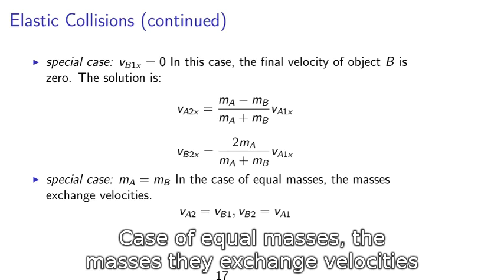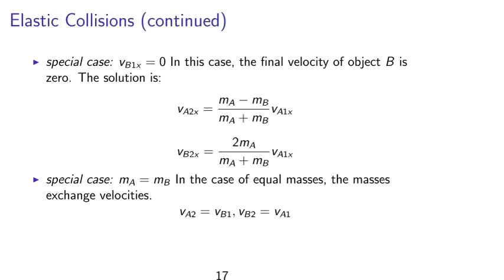We can consider the special case where ma is equal to mb or in the case of equal masses. What happens is that they exchange velocities. So va2 is equal to the initial velocity of b and final velocity of b is equal to the initial velocity of a.